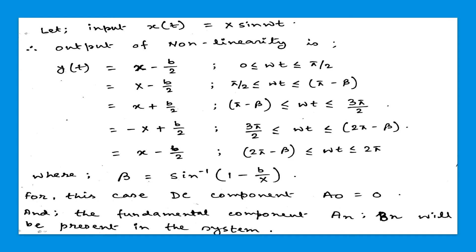The function Y(t) equals B/2 when the limit is from π minus β to 2π minus β. And Y(t) equals minus X plus B/2 when the limit is from 2π minus β to 2π.